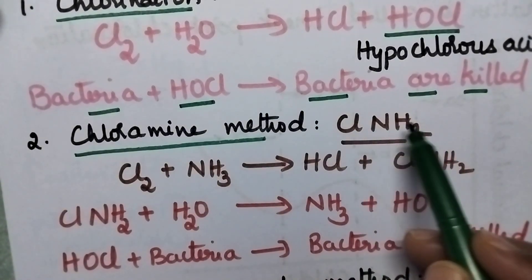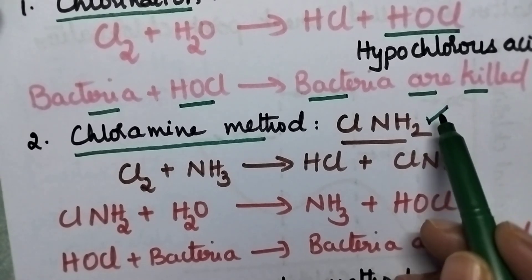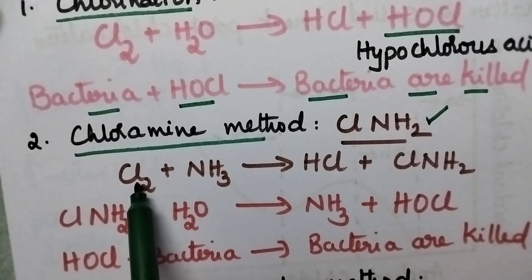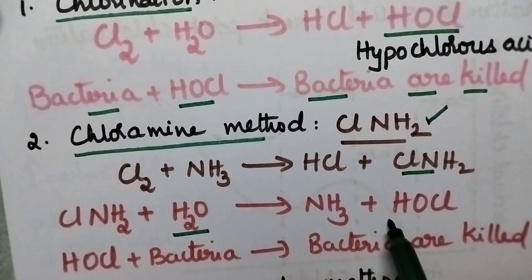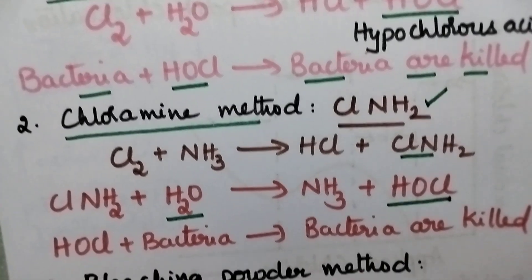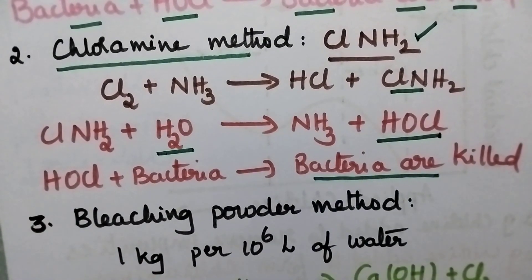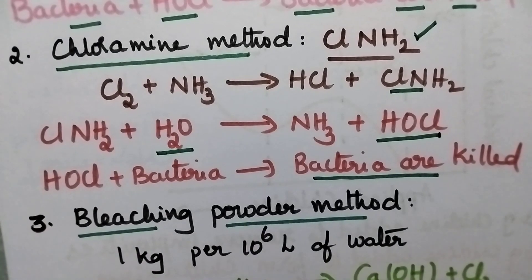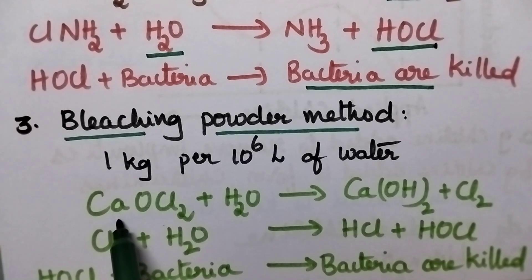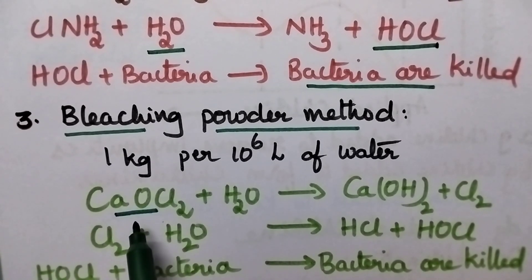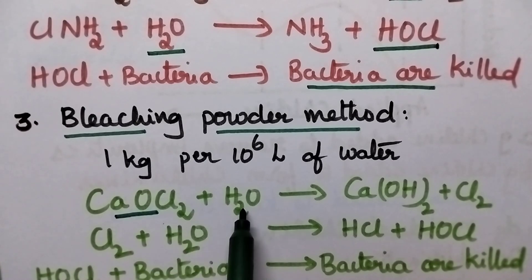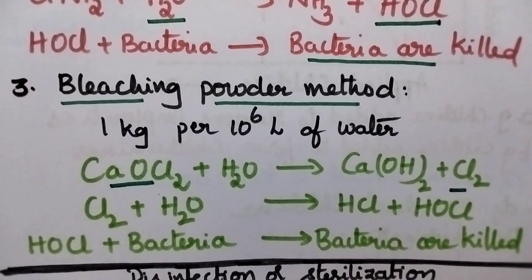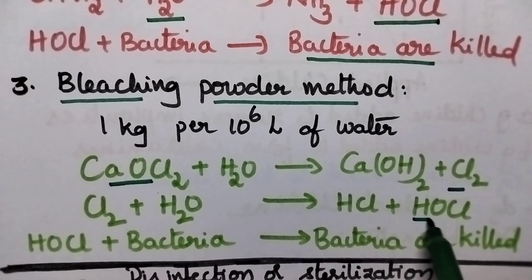The second method is called the chloramine method. The chemical formula of chloramine is ClNH₂. It is not readily available, so it should be prepared by treating chlorine with ammonia. Whenever chloramine is added to water, it again results in the formation of hypochlorous acid, and thus the bacteria will be killed. The third method is called the bleaching powder method. The chemical formula of bleaching powder is calcium oxychloride, that is CaOCl₂. Whenever bleaching powder is added to water, it results in the formation of chlorine, which reacts with water and again forms hypochlorous acid, killing the bacteria.